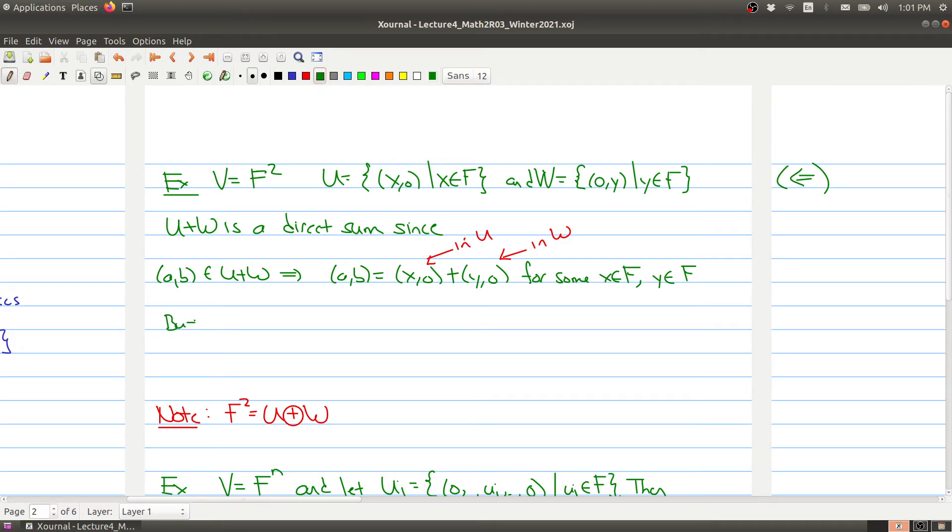But now when we look at this, this can only happen if a is equal to x and b is equal to y. So there's only one way in which we can write a, b. So a, b can be written as a, 0 plus 0, b. And this is the only way I can express a, b as a sum of something in U and as something in W.